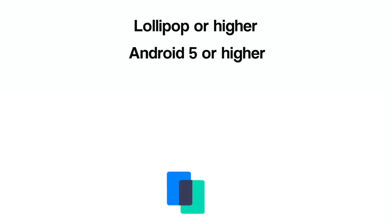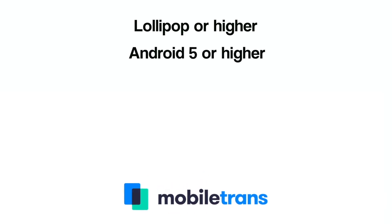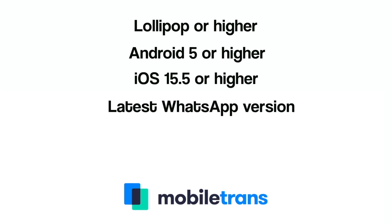There's another option you can try: the official Move to iOS app. On Android, you can download this from the Google Play Store. It moves all your information from Android to iPhone. There are some requirements: your Android device must run Android OS Lollipop or above — Android 5 or higher — and the iPhone needs iOS 15.5 or newer. You also need the latest WhatsApp versions on both devices.